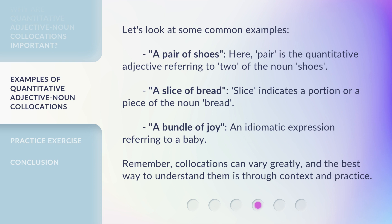Let's look at some common examples. A pair of shoes — here, 'pair' is the quantitative adjective referring to two of the noun, shoes. A slice of bread — 'slice' indicates a portion or a piece of the noun, bread. A bundle of joy — an idiomatic expression referring to a baby. Remember, collocations can vary greatly, and the best way to understand them is through context and practice.